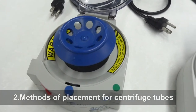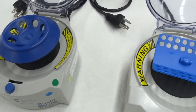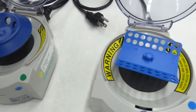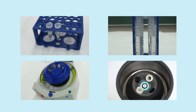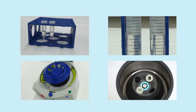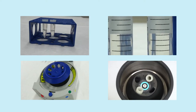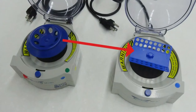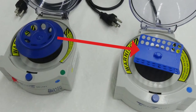Methods of placement for centrifuge tubes: Each centrifuge has its corresponding centrifugal rotors of different types. Choose the appropriate rotor in correspondence to the centrifuge tube size. Please follow the device manual's instructions when replacing the centrifugal rotor.